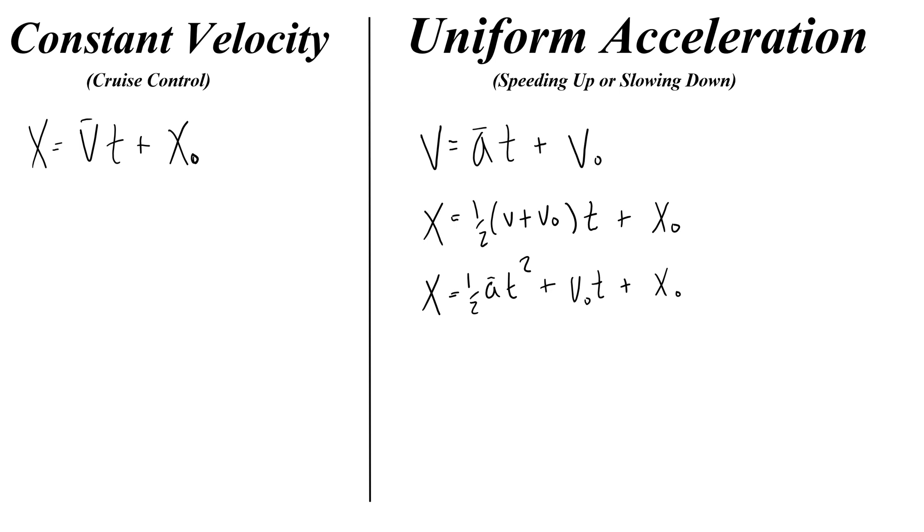There's one last equation we have for accelerated motion and that's the ain't got no time equation. V squared equals two times the acceleration times delta x plus the initial velocity squared. So here they are, all of our equations. Have these written down in one spot so that you can always go to that one spot and use it when trying to solve problems.